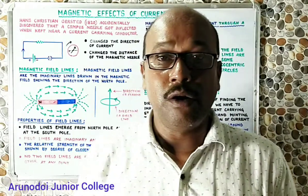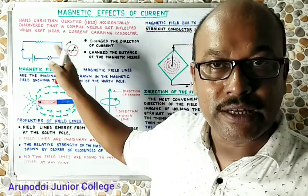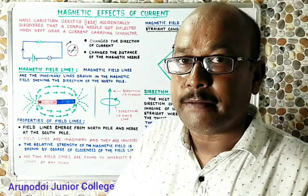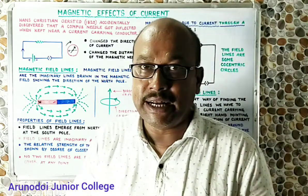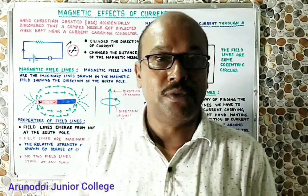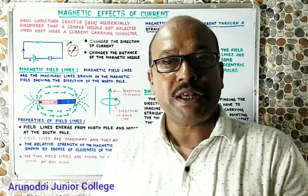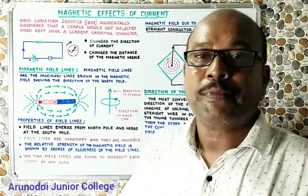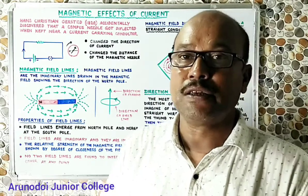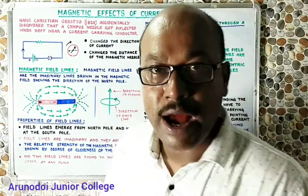This surprised Orsted — how could the magnetic needle be deflected by passing electric current? He knew that a magnetic needle can only be deflected or attracted in the presence of another magnet. So he got the idea that when electric current passes through the wire, the wire must be behaving like a magnet, and it is this magnetism produced in the wire that causes the magnetic needle to deflect.